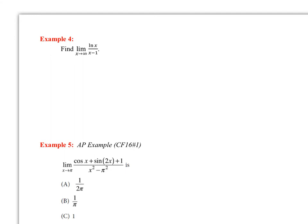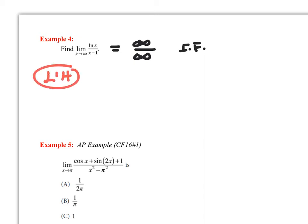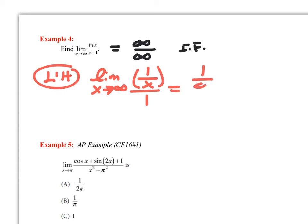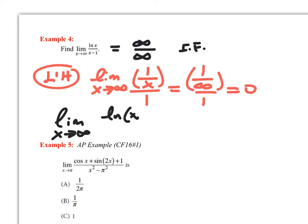Let's try another. Direct substitution: the natural log of infinity is infinity, and infinity minus one is still infinity — so we have infinity over infinity, an indeterminate form. L'Hopital's Rule applies. The derivative of ln(x) is 1/x, and the derivative of (x − 1) is one. Direct substitution gives (1/∞) over 1, which equals zero. Therefore, the limit as x goes to infinity of ln(x) over (x − 1) equals zero.